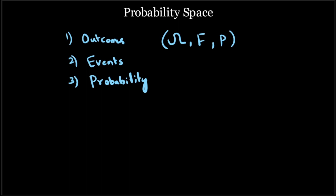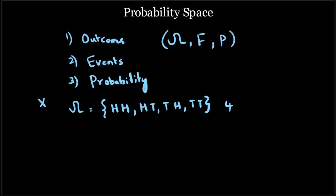Now let us try to understand these three using the example of a coin toss experiment. Assume that you are performing an experiment by tossing a coin twice sequentially. The possible outcomes are: head and head, head and tail, tail and head, or tail and tail — four possible outcomes of this coin toss experiment.